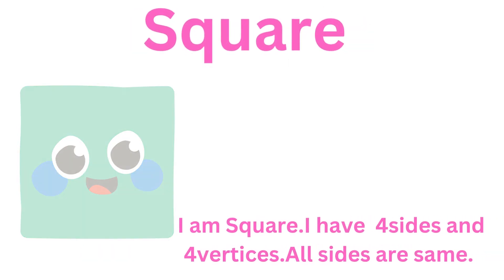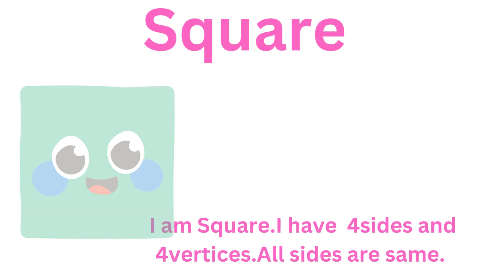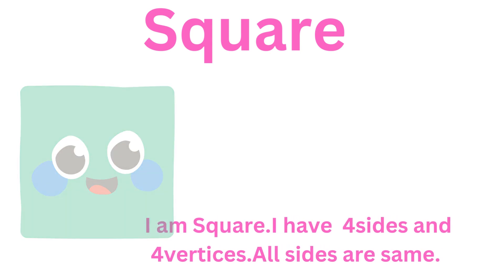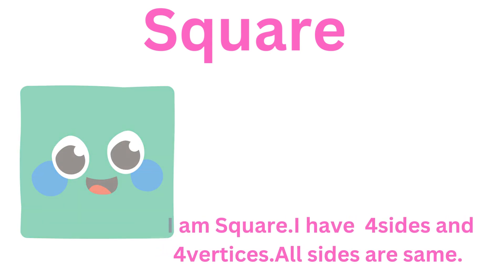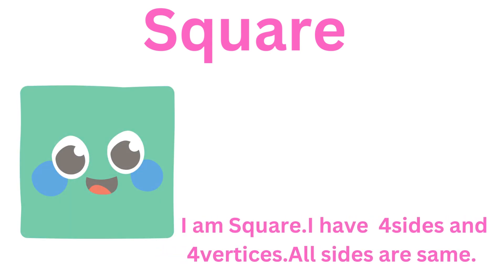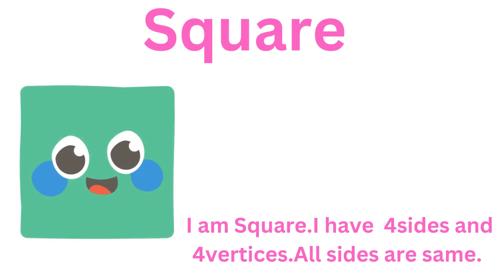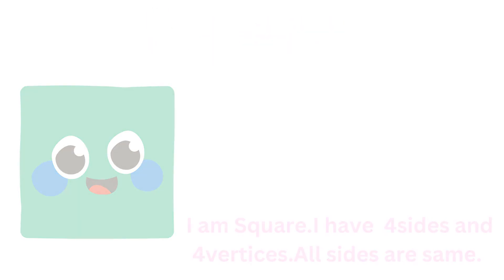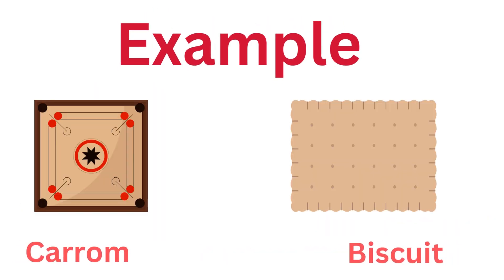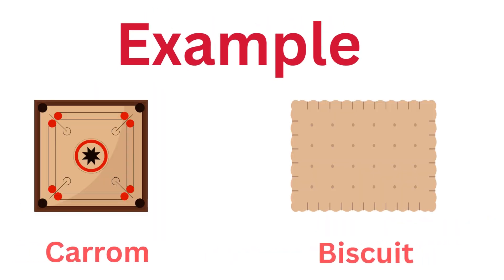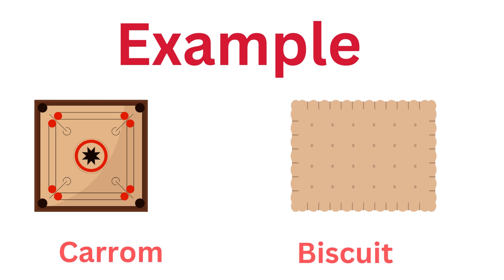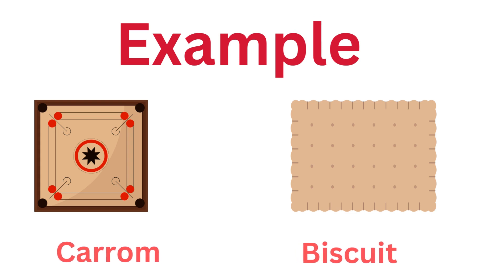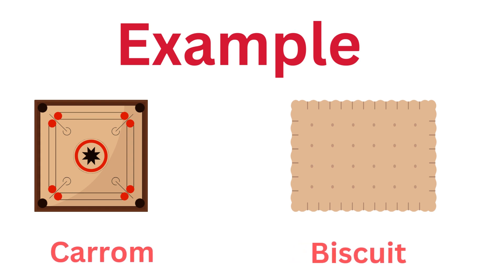Here I am square. I have four sides and four vertex. All sides are the same. Example: biscuit.